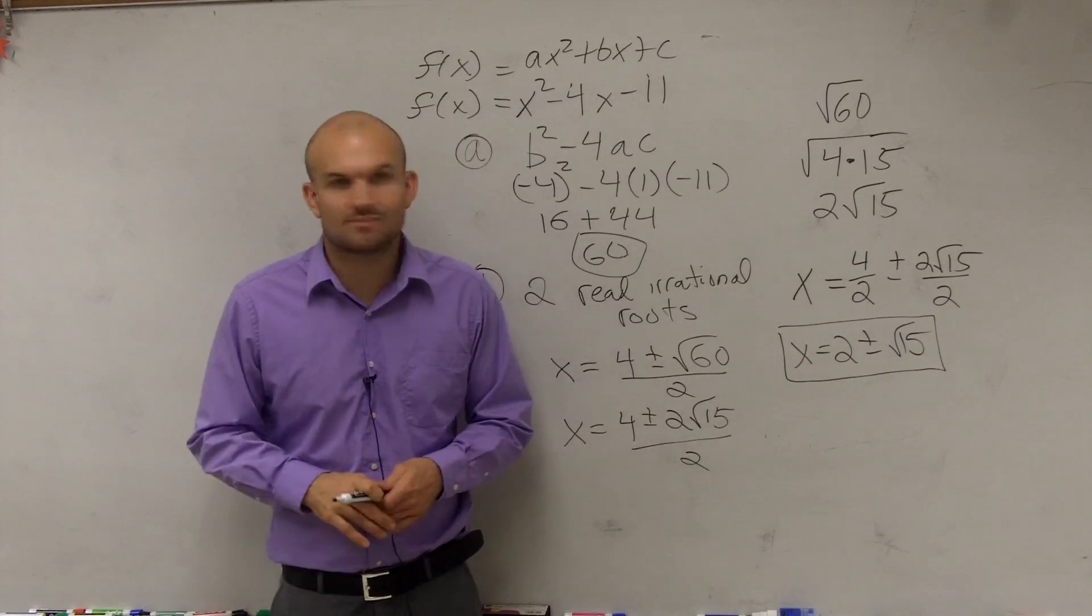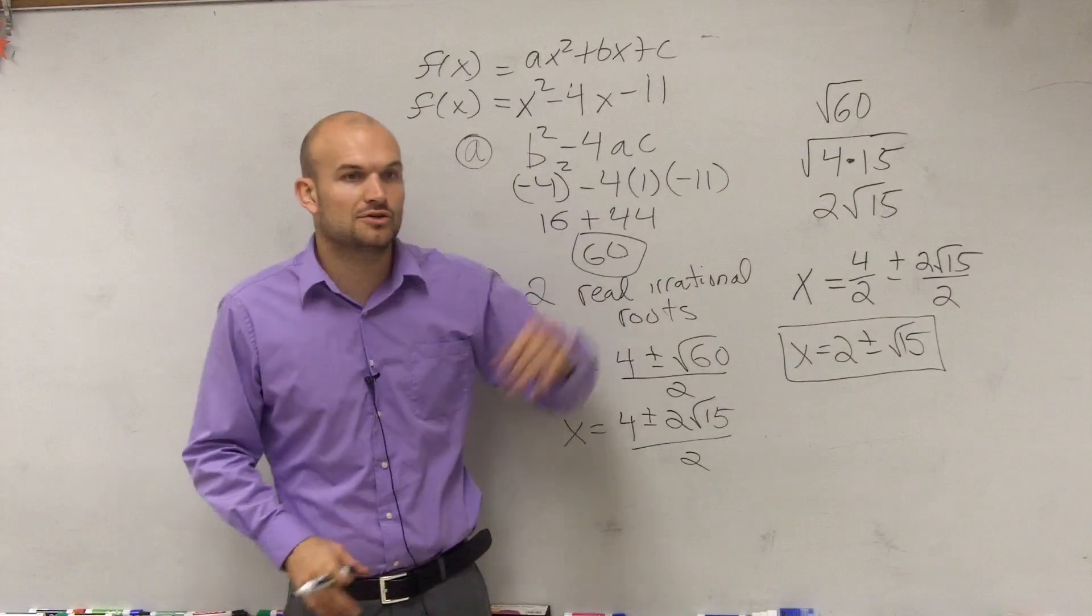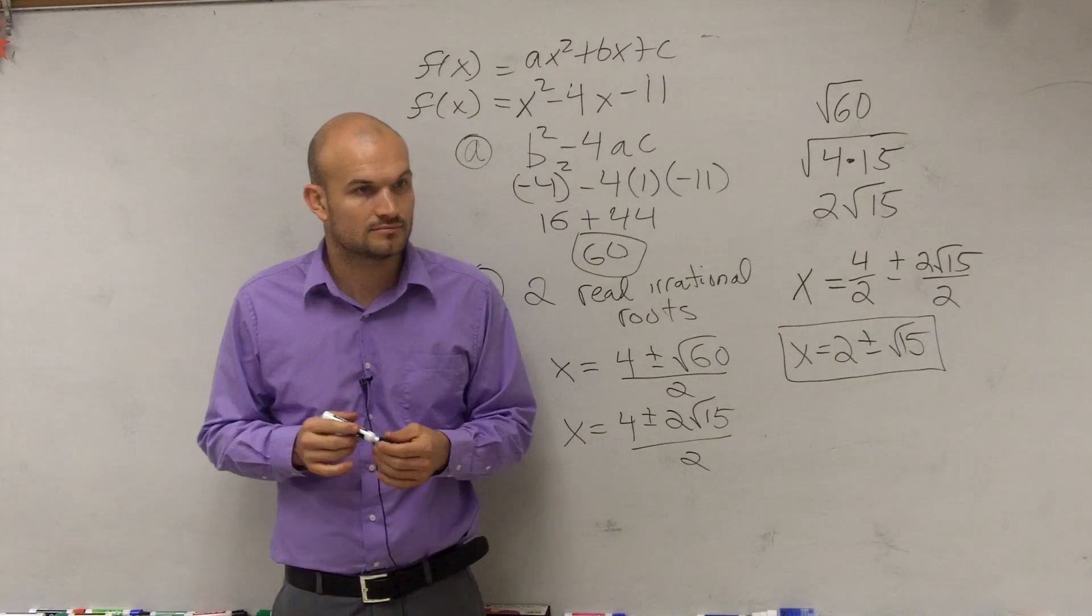You need to have it all the way simplified. I do not want to see decimal points. And if you have a radical you can simplify, I want to see it simplified. Make sense?